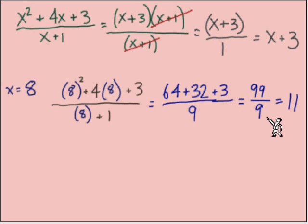We get a 99 over 9. Another fraction that does divide evenly equals 11. So are we matching, are our answers matched up? We evaluated and it equaled 11. Would we get 11 if we evaluated our simplified expression? Yes, definitely. 8 plus 3, we'd get the same 11.